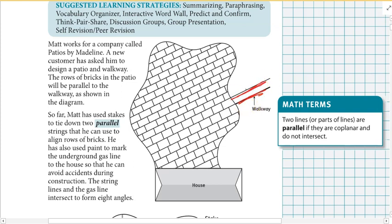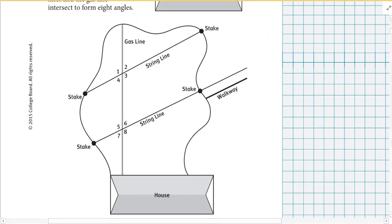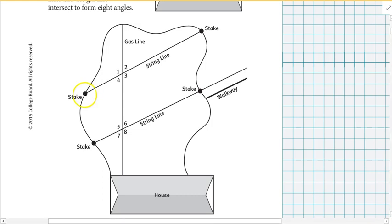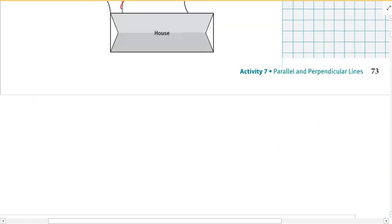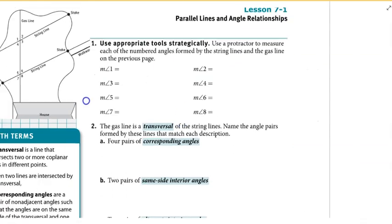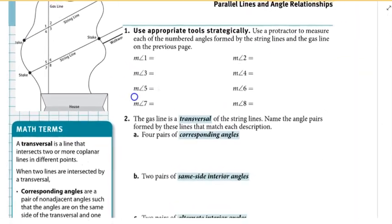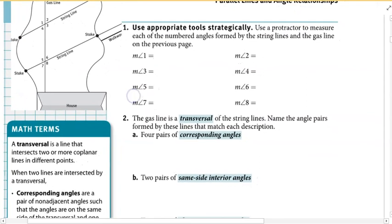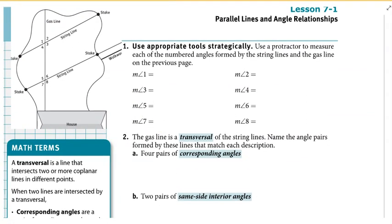Go ahead and read these first two paragraphs and then we'll skip down to the bottom. Here's a diagram of the situation. We see that we have a gas line intersecting two lines that he laid out. We have some parallel lines that he created and there's a gas line running through intersecting those. That gas line is called our transversal. The definition of a transversal is a line that intersects two or more coplanar lines at different points.